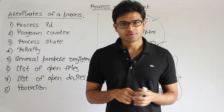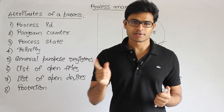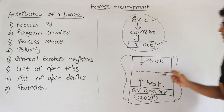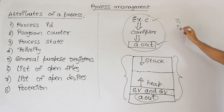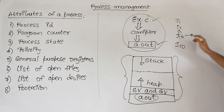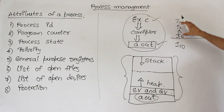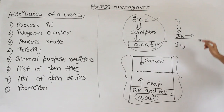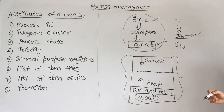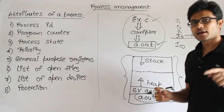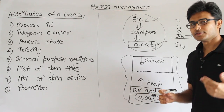Next is Program Counter. While you are executing a process and you suddenly stop the process and restart it, from which point should you start execution? Assume we have instructions i1, i2, i3, up to i10. Say you stop execution after i6 and then execute some other process. When you start this process again, the program counter contains what the next instruction to be executed is, so that you can keep on executing without any repetition.